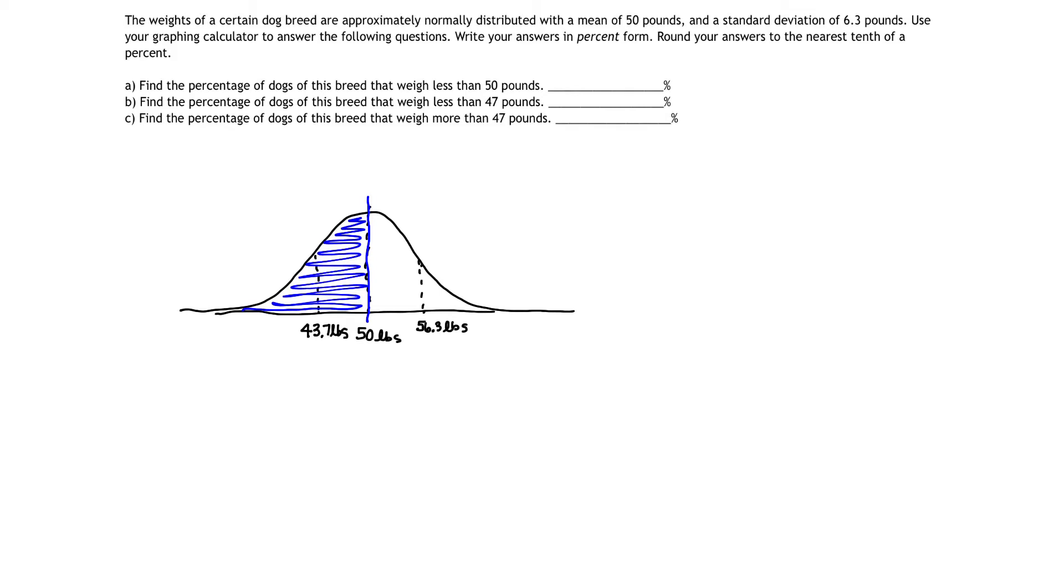So what percentage of the curve is shaded right now, left of 50 pounds? Well, isn't that just 50% of the curve? It is. 50% of the curve corresponds to the percentage of dogs that weigh less than 50 pounds.